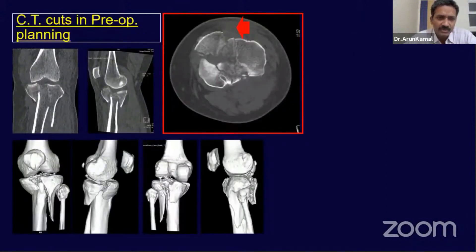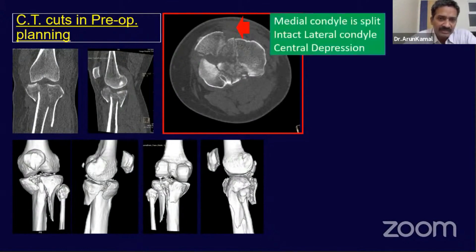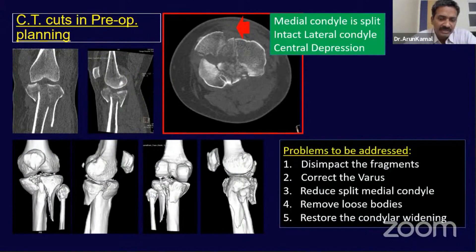A proper CT evaluation with all cuts was performed. A very useful cut in planning is the axial cut — it shows two fragments: an anteromedial fragment, a posteromedial fragment, and also a large lateral fragment.